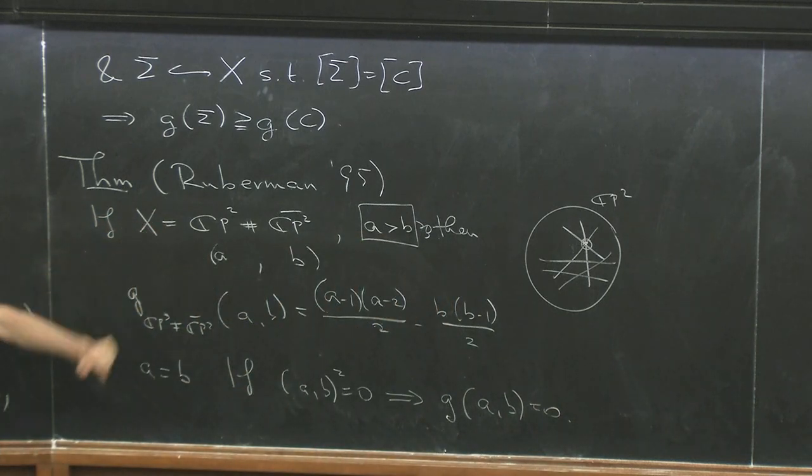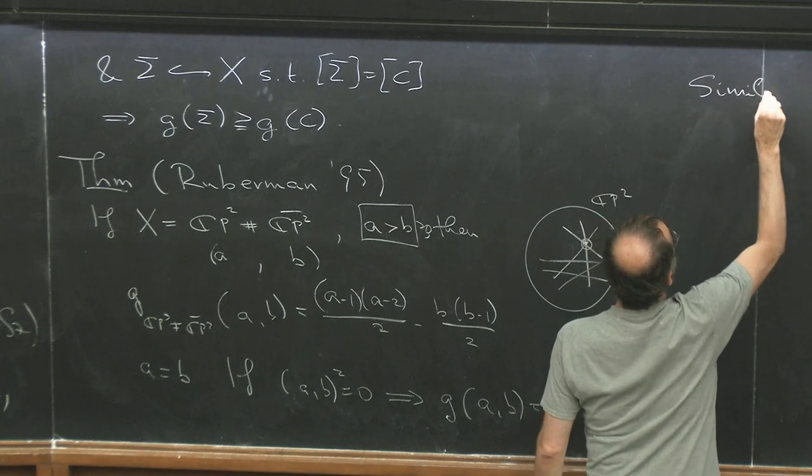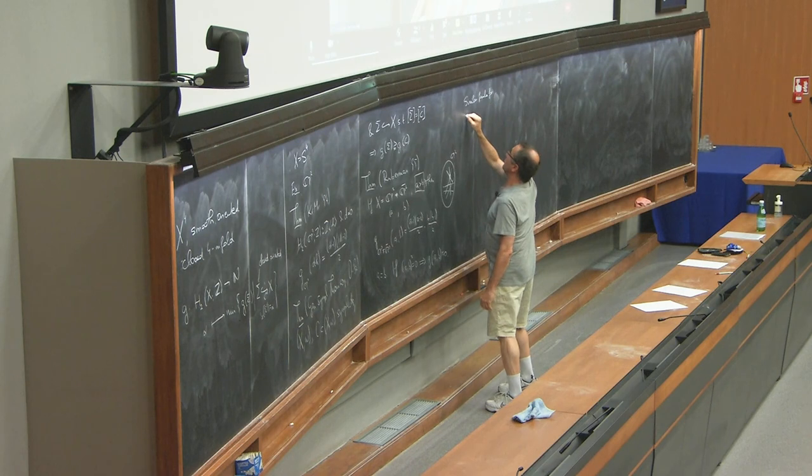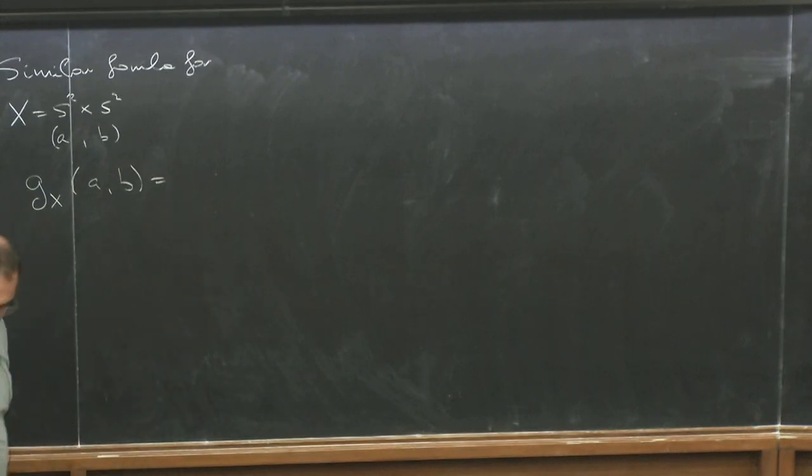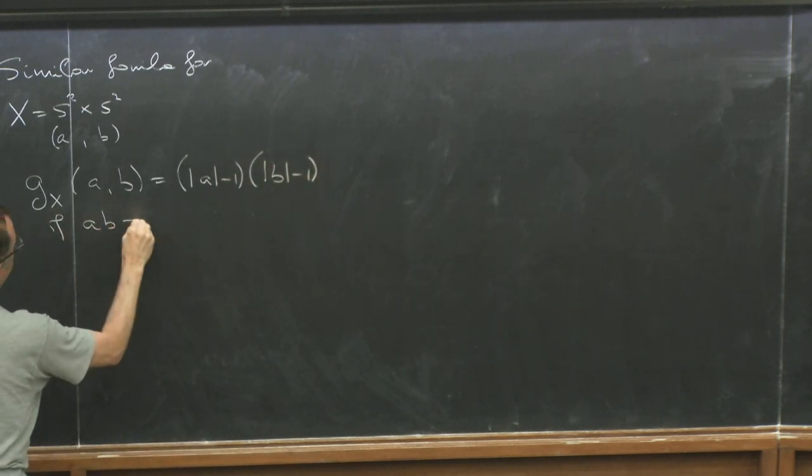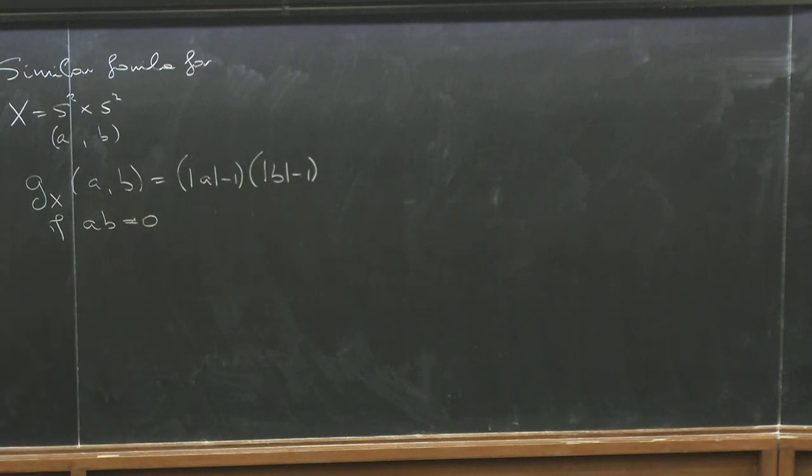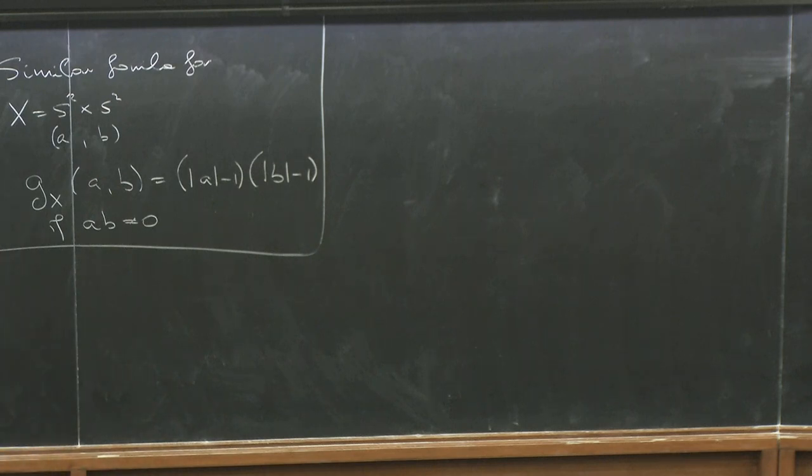Okay, so this really used the symmetry built in the manifold, and a very similar argument applies when you take S2 cross S2. So the same or similar formula for S2 cross S2. Here again, the two generators are denoted by A and B, and the minimal genus function is given by this simple expression. If AB is not equal to zero, and when one of them is zero, then again you can represent it by a sphere. Okay, so these are very simple cases, mainly because you have a symmetry and you can reverse the orientation of the manifold.